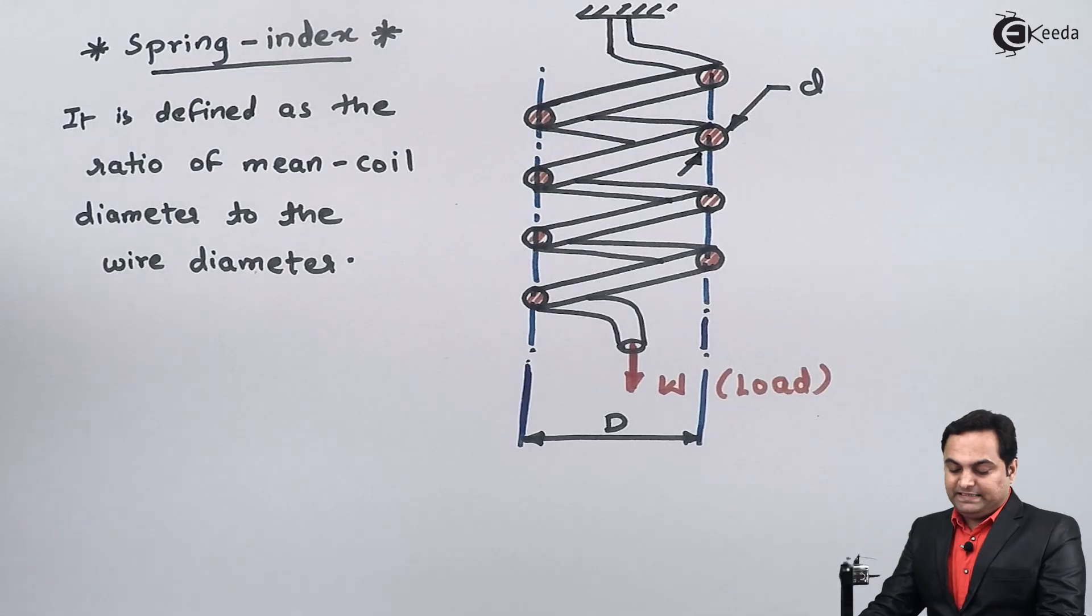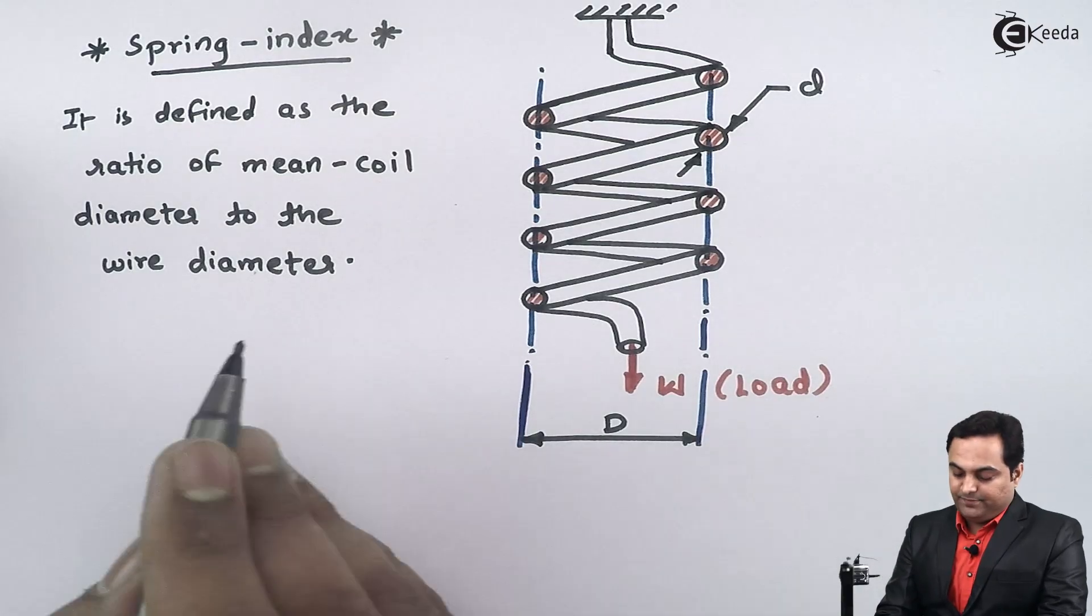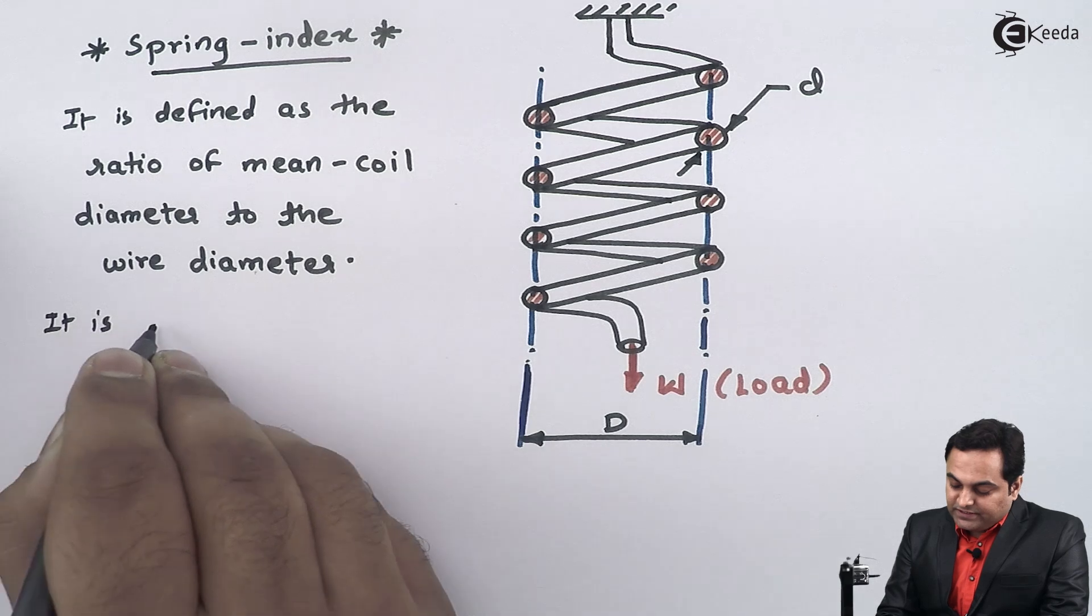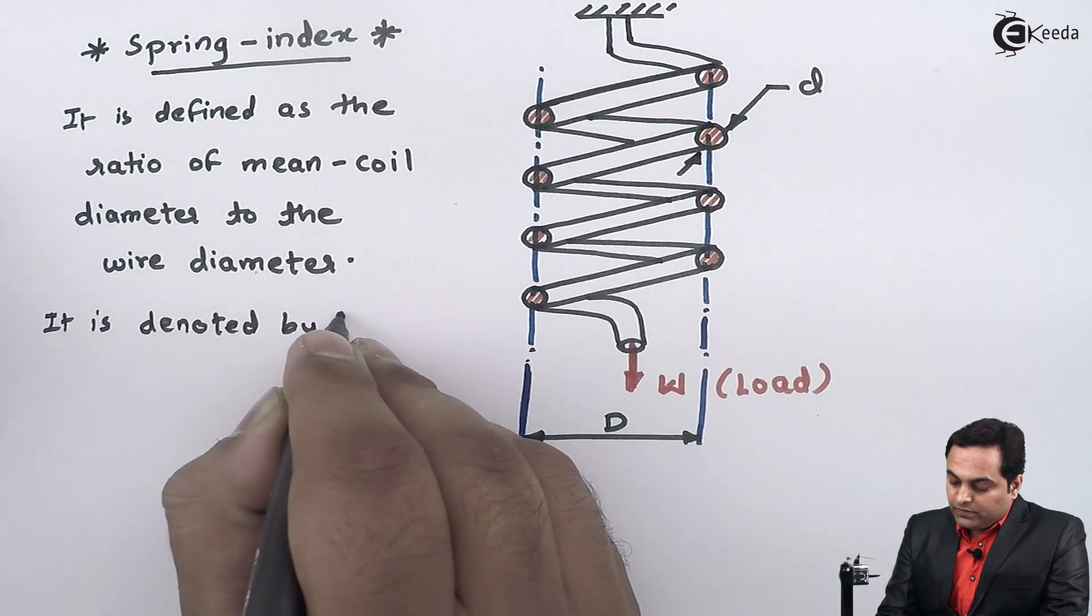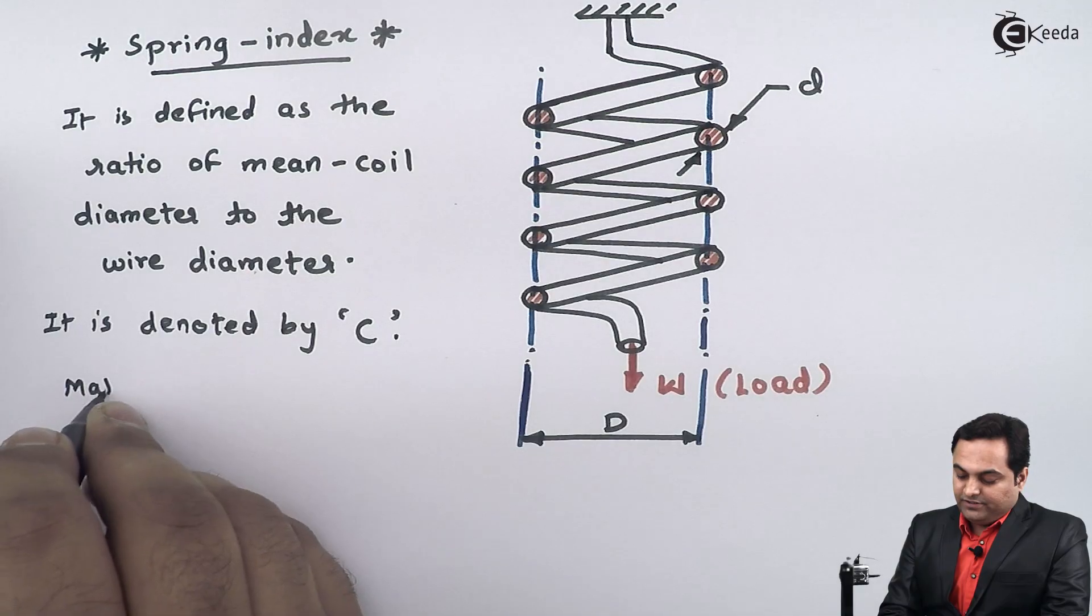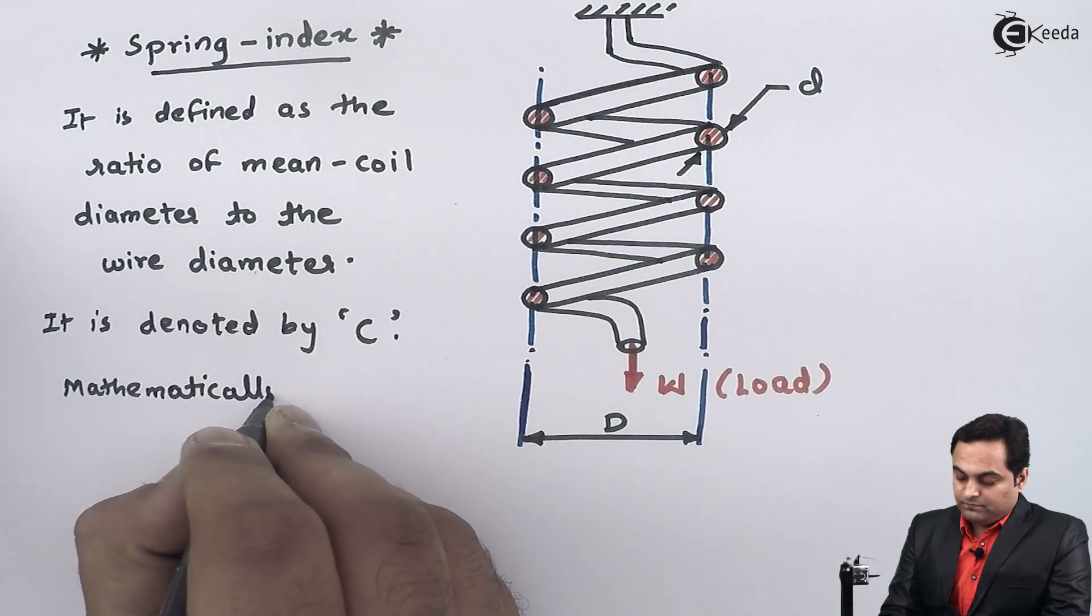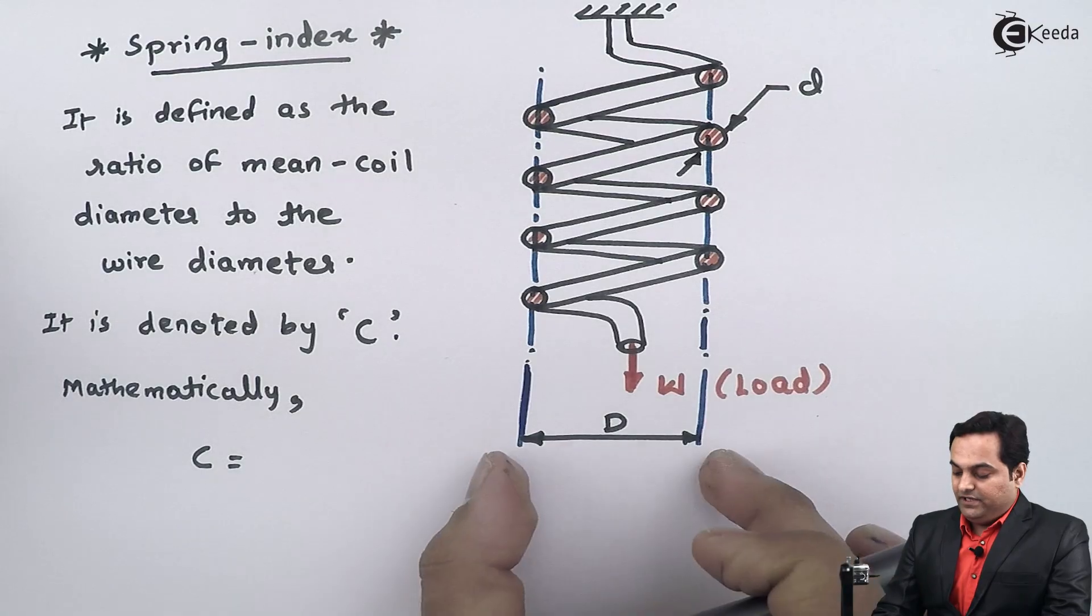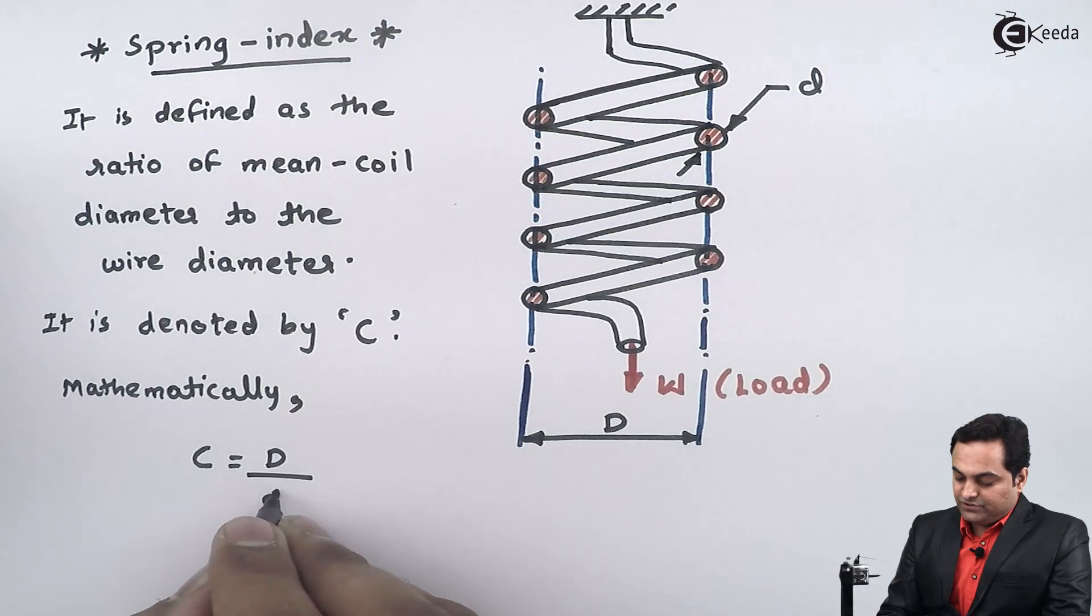Since spring index is defined as the ratio of mean coil diameter to wire diameter, spring index is denoted by capital C. Mathematically, the formula becomes C equals capital D divided by small d, where D is the mean coil diameter and d is the wire diameter.